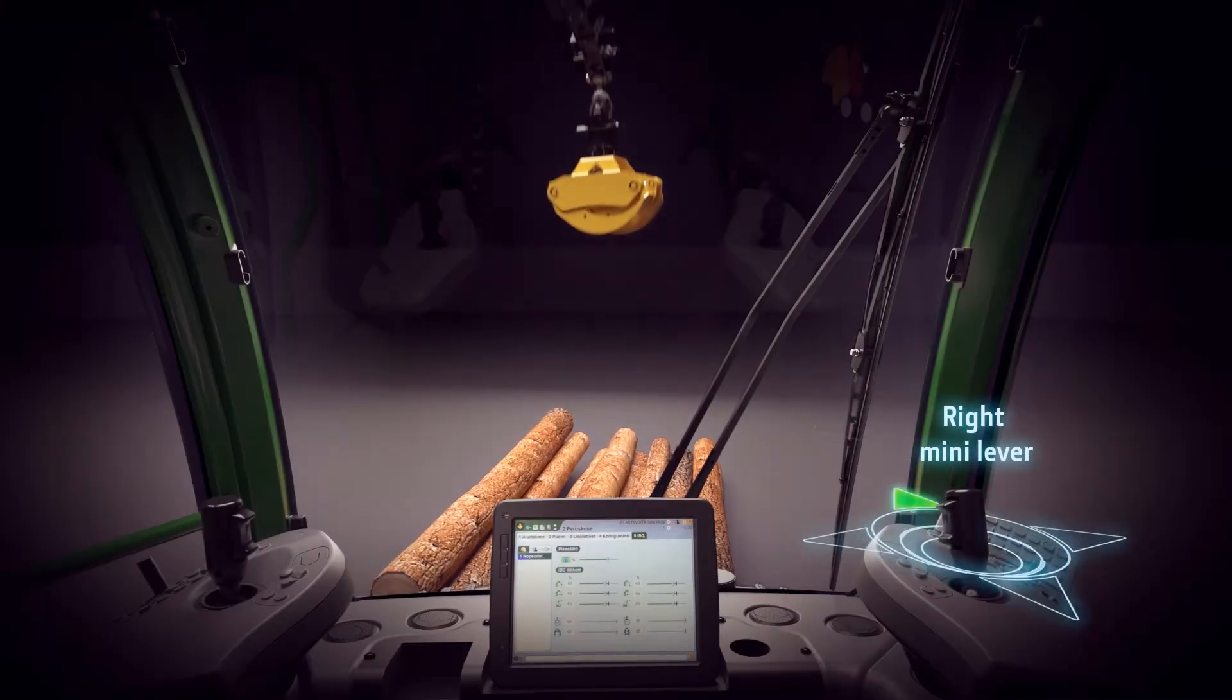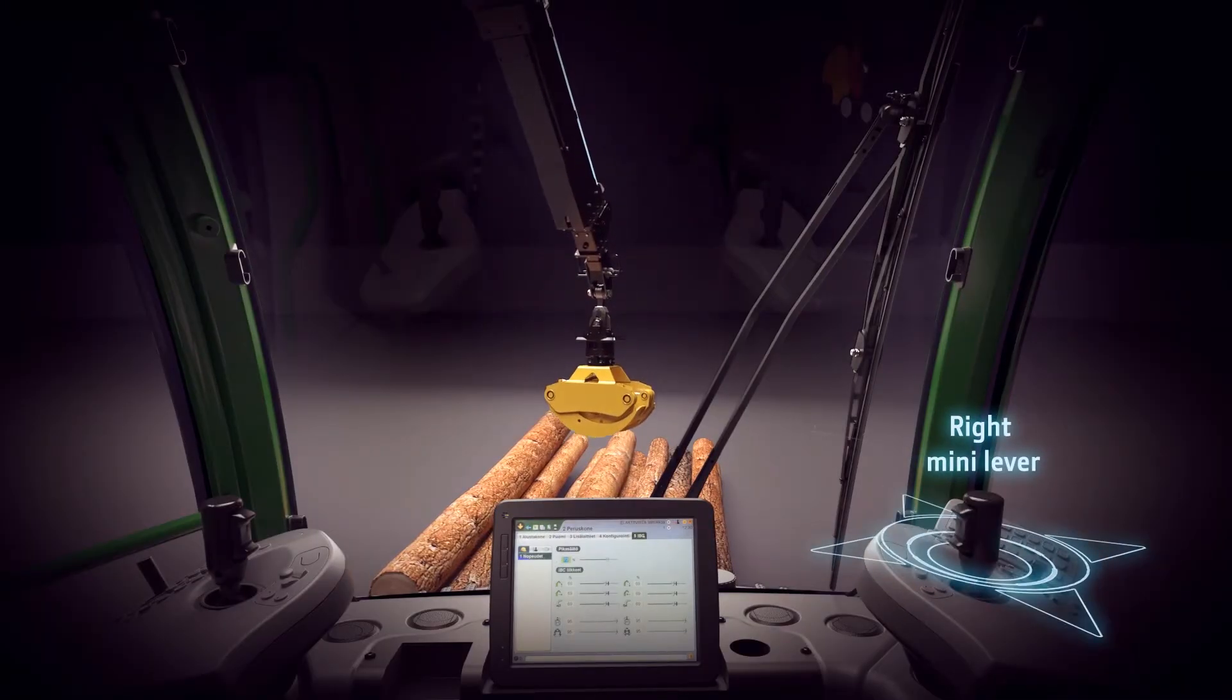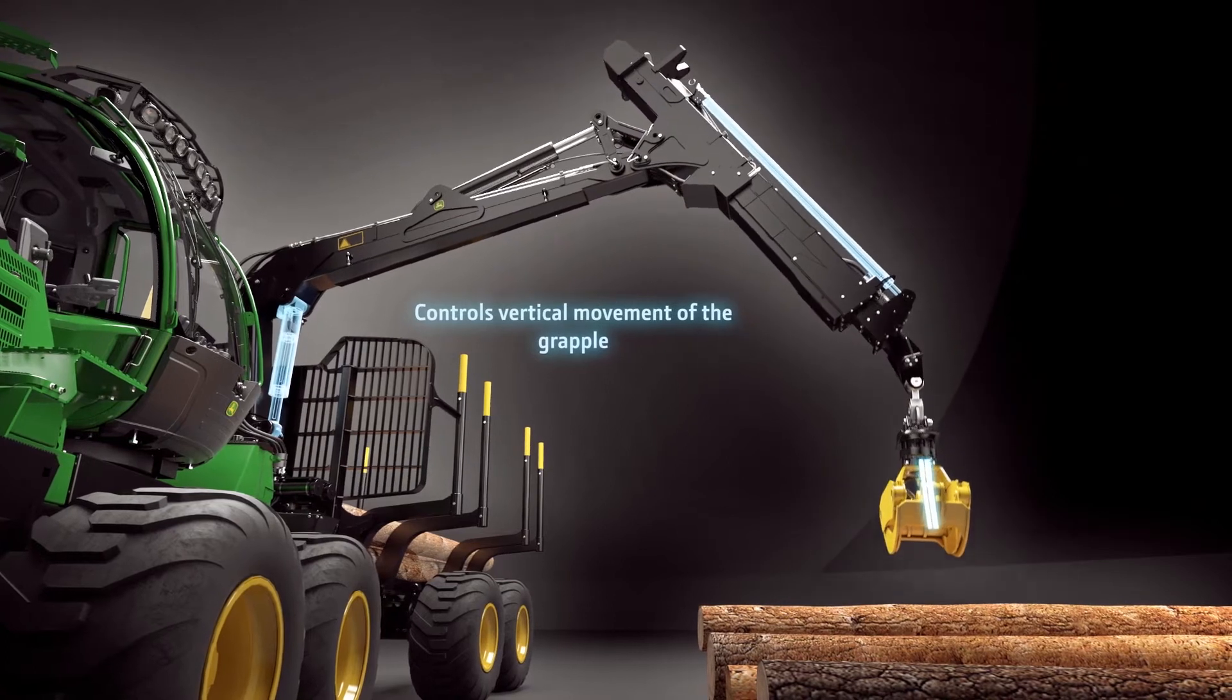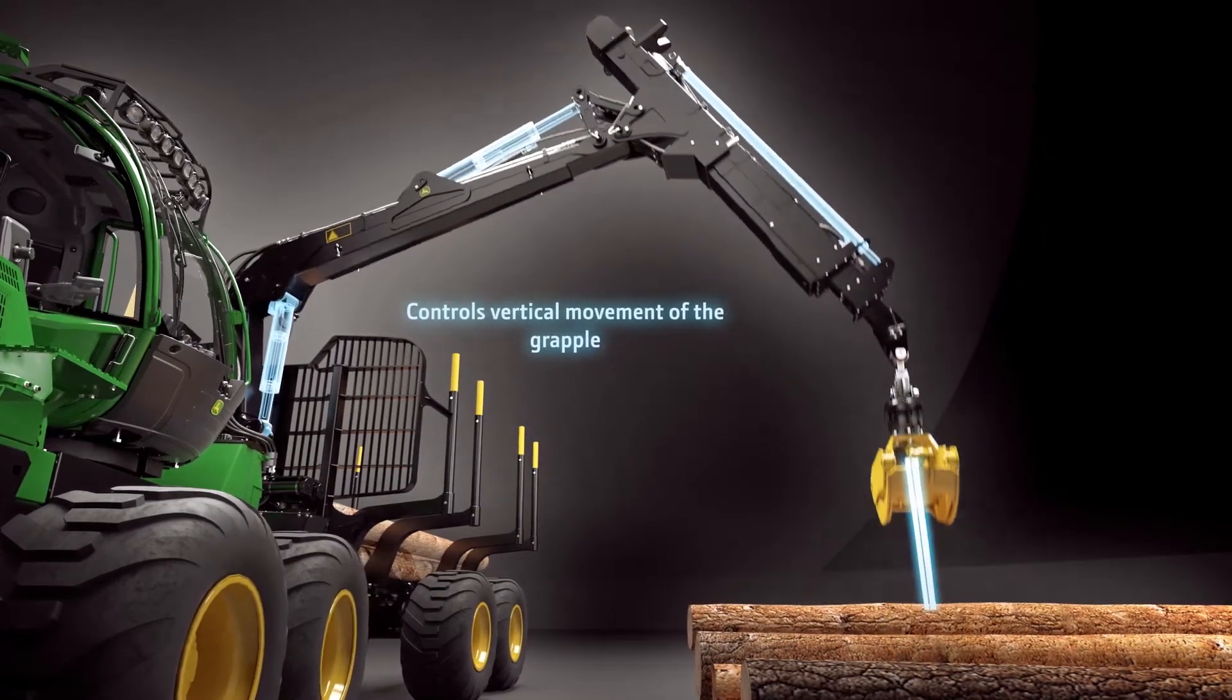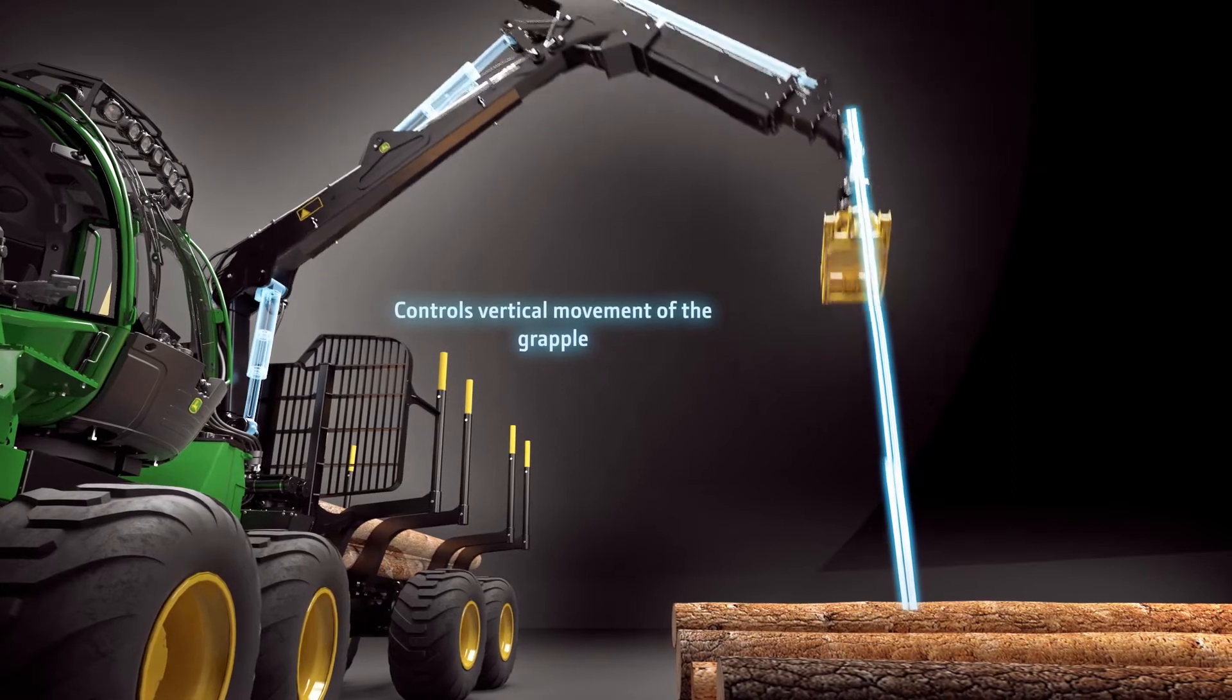With the mini-lever on the right, the operator moves the grapple up and down. Intelligent Boom Control automatically controls the lift, slew and extension, keeping the movement straight.